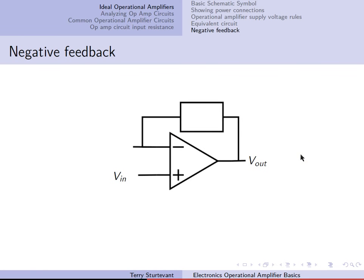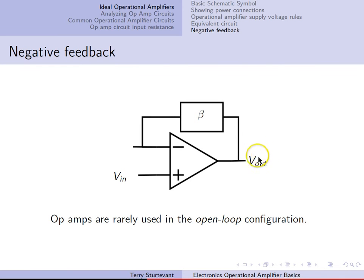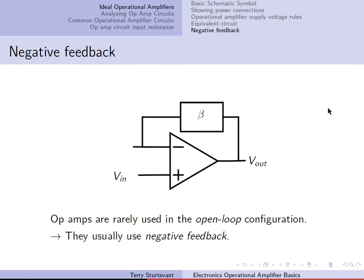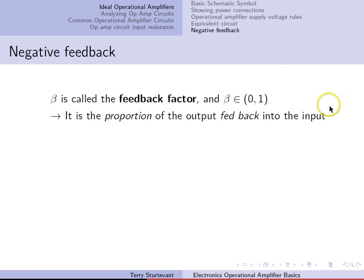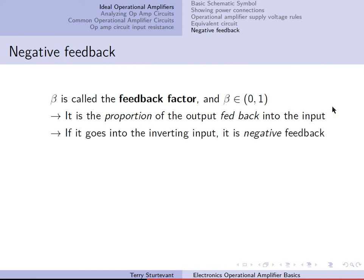Normally, op-amps are used with negative feedback, which means that a portion of the output is fed back into the inverting input. Op-amps are rarely used in the open-loop configuration, which means without any feedback. The feedback factor is called beta and is a number between 0 and 1 — it's the proportion of the output fed back into the input. If it goes into the inverting input, it's called negative feedback.